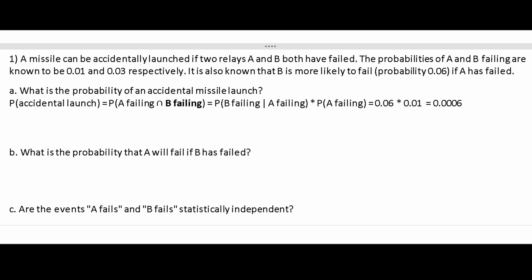So the probability of an accidental missile launch is 0.0006. Now, the next question is, what is the probability that A will fail if B has failed?